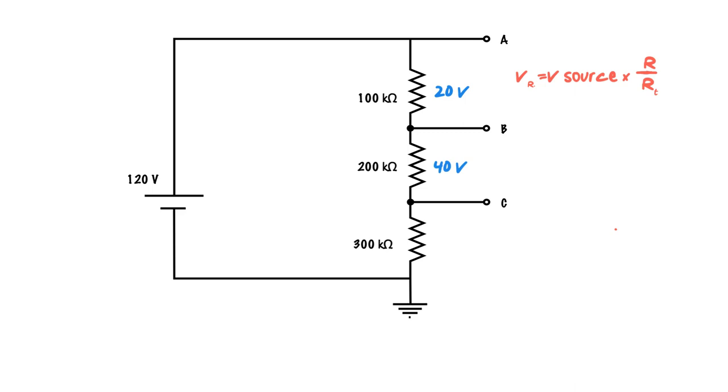In this one, it's a very similar idea. All I'm doing is taking the 200k ohms, dividing that by the 600k ohms, and multiplying it by 120, and I get a 40 volt drop across that resistor.